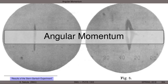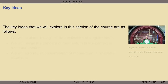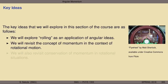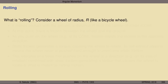We're going to take a look at the final concept to revisit in the context of rotational motion: angular momentum. But first, we'll examine a motion that combines both linear and rotational motion. The key ideas are: rolling as an application combining linear and angular concepts, momentum in a rotational context, conservation of momentum in rotational situations, and the rules we can draw from that to understand the universe.